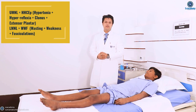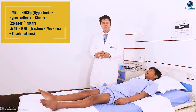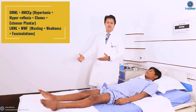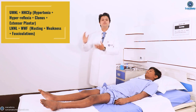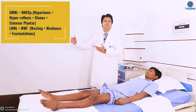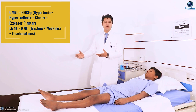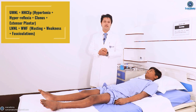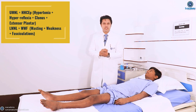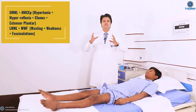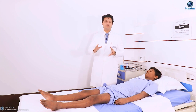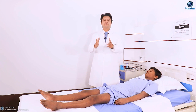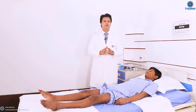Wasting is the most important lower motor neuron feature. For dorsal column involvement, joint position sense and vibration sense will be lost. You need to demonstrate at least these key features, which together produce a long differential diagnosis. The examination starts with inspection from the foot of the bed, looking for wasting, fasciculation, and scar marks.